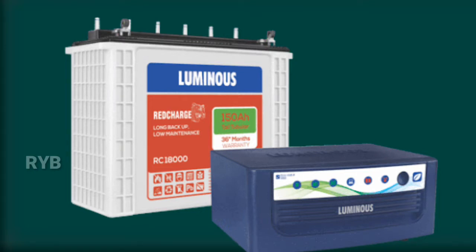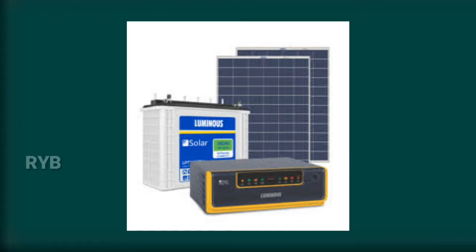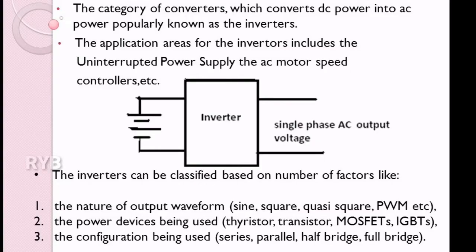We are using inverters in home appliances and also in solar applications, because solar energy is DC but for grid connection it requires AC. Hence the inverter is important to convert DC into AC at the desired frequency. The aim of an inverter is to convert DC voltage into AC voltage at different frequency levels.